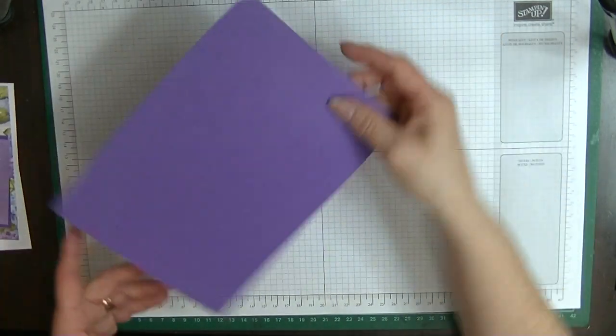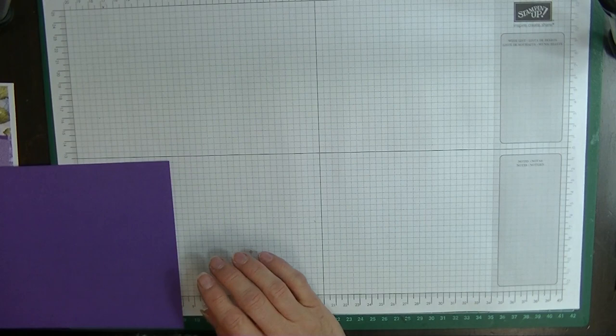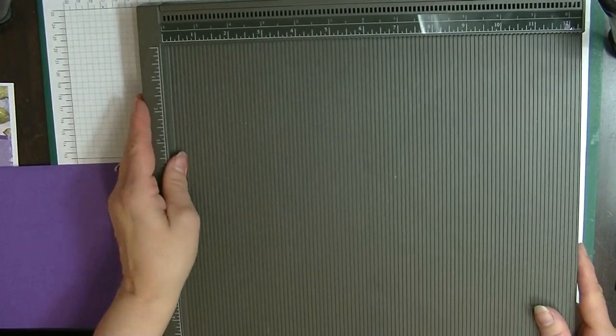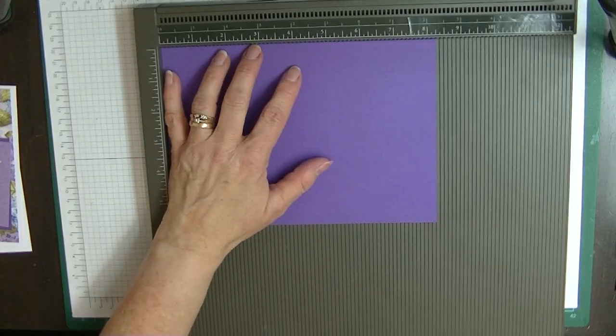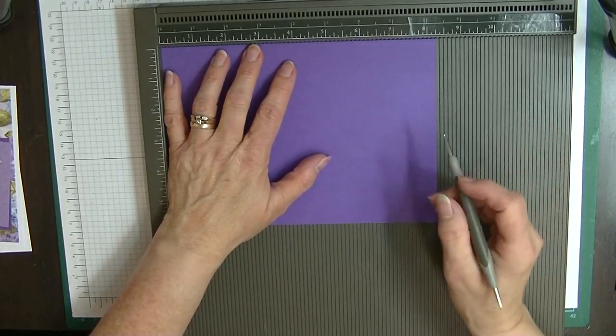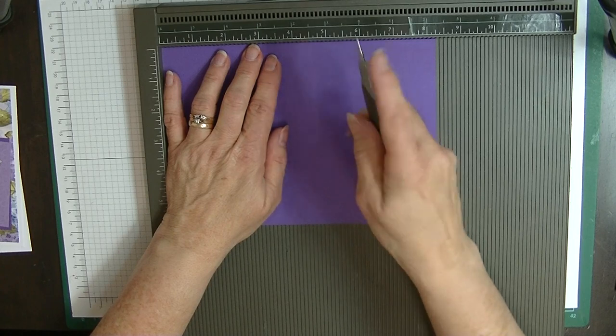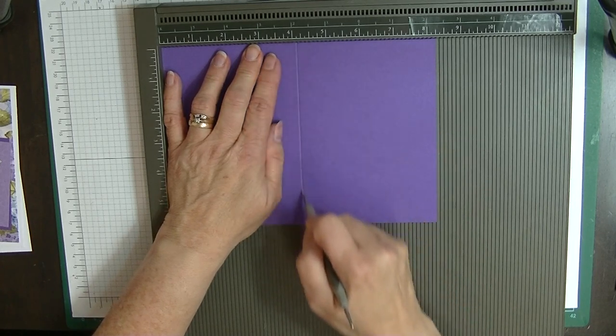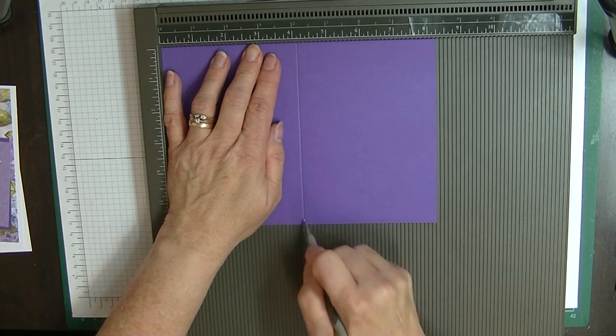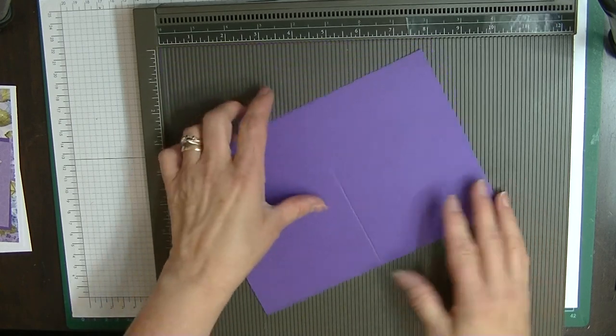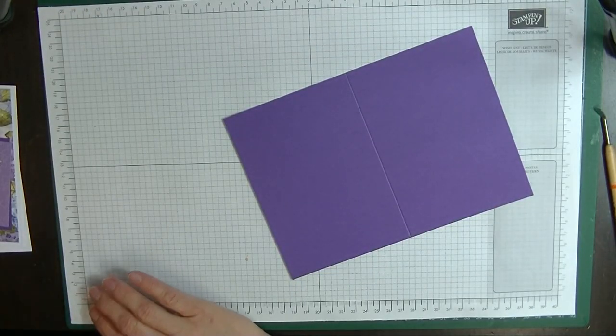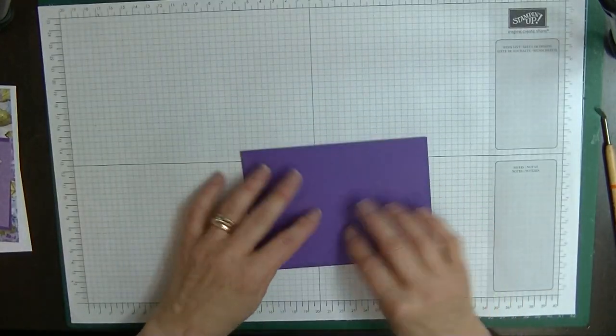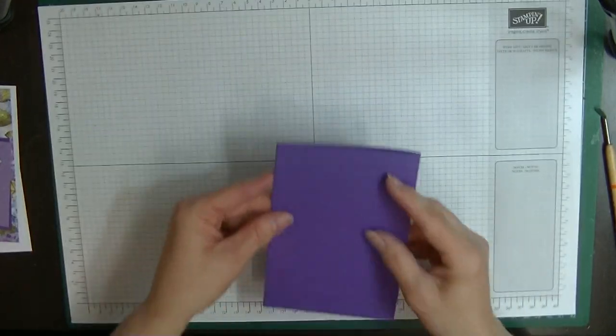Let's pop all those out of the way and we're going to start by bringing in our scoreboard. We're going to score our main card on the long side at the four and one eighth mark. That is really all the scoring we're going to do, so let's pop that out of the way.